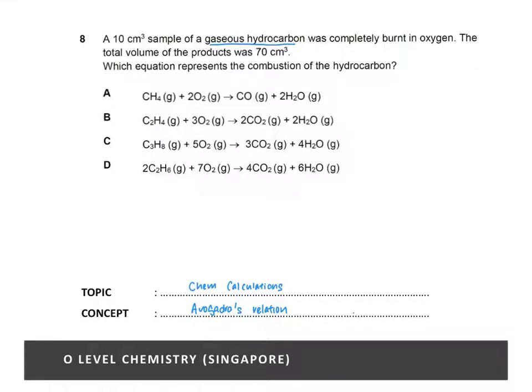Then you are given the total volume of the products. If you look at the state symbols of the reactants and products in all the options, you will notice that they are all gases.